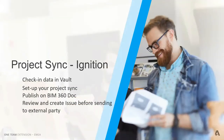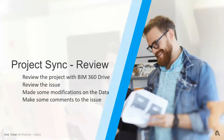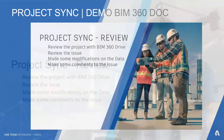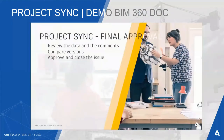The Project Sync ignition workflow: check data in, set up Project Sync, publish to 360 Docs, and it's reviewed by the external party. In the review stage, the product is reviewed, issues are identified, data is modified in the cloud, comments are added, it's checked back into Vault, downloaded for final approval, versions are compared, data is reviewed, approved, and the issue is closed out of Vault.